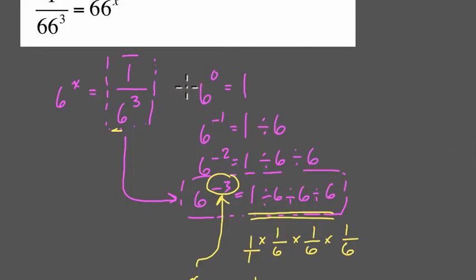Because instead of 6 to the 0, we can think of 66 to the 0 being 1. Then 66 to the negative 1 being 1 divided by 66.